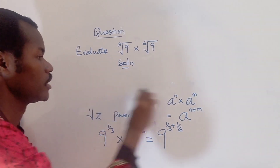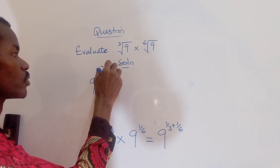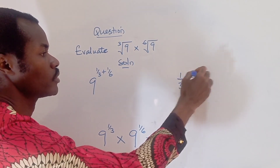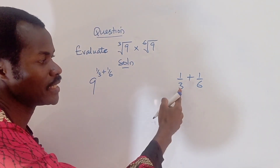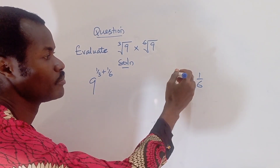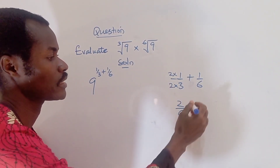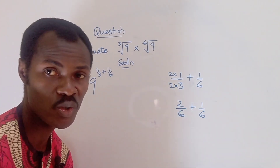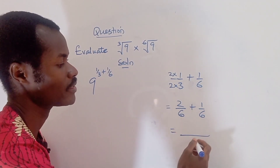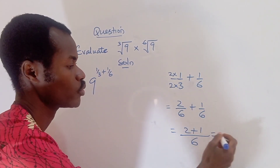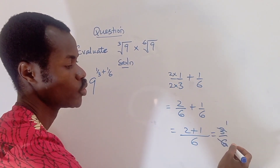Now we solve by adding the fractions. We have nine raised to the power of one third plus one sixth. To add these, I use the common denominator method — since six is divisible by three, I multiply one third by two over two to get two over six, then add one over six. Two plus one gives three over six, which simplifies to one half.